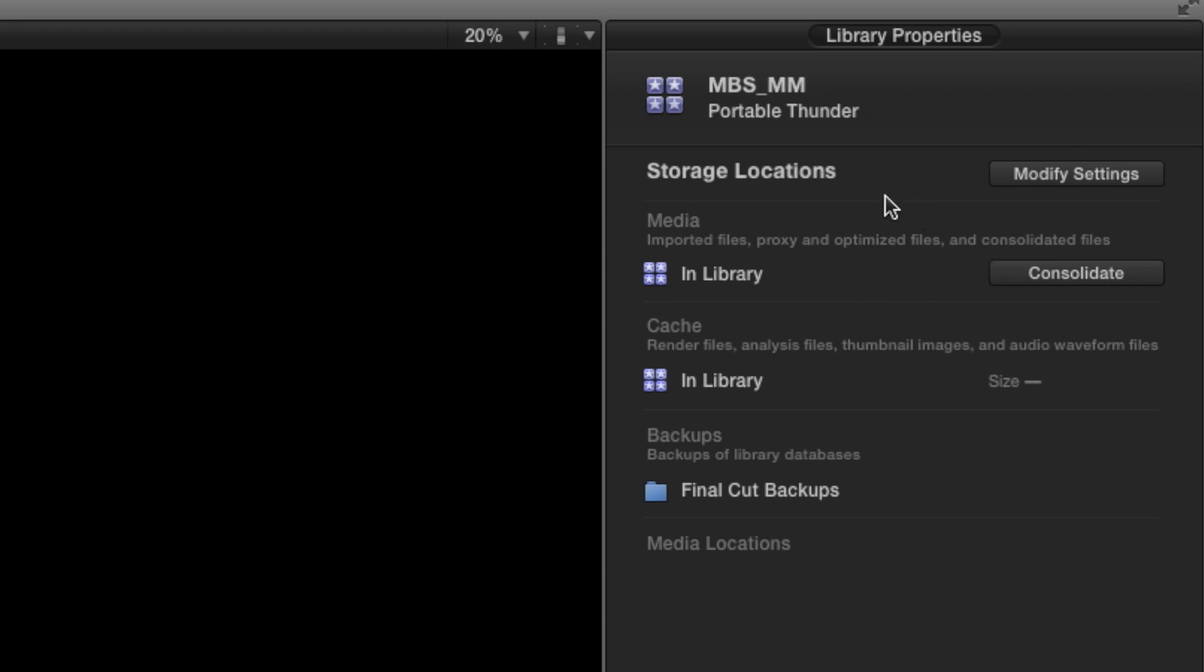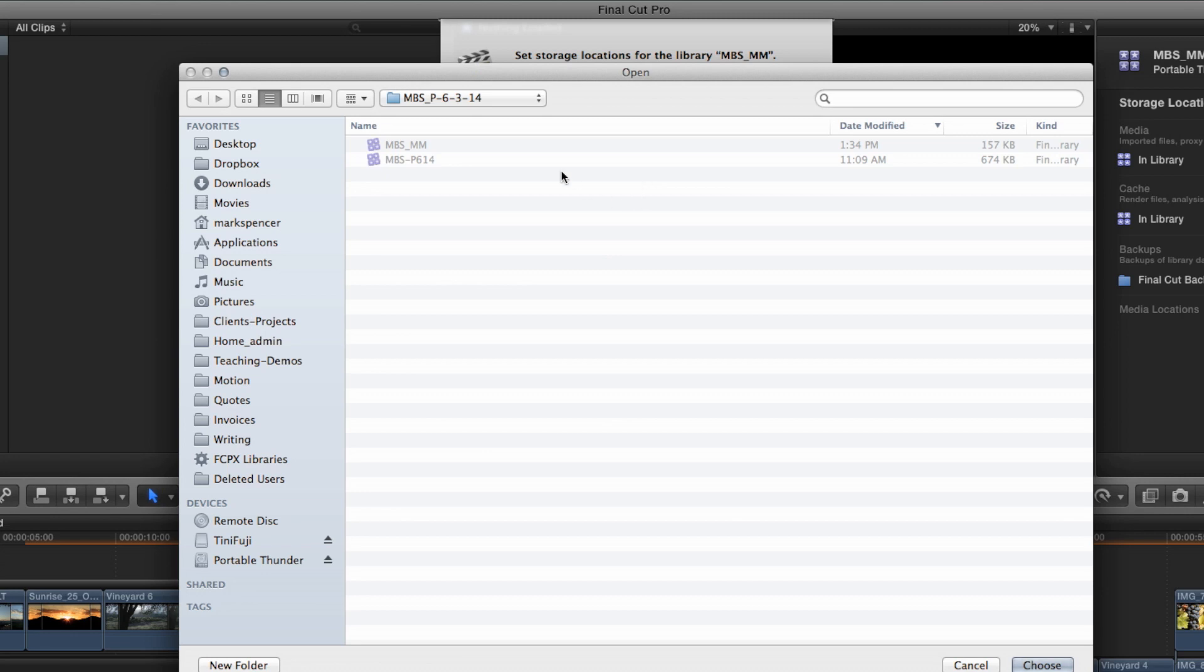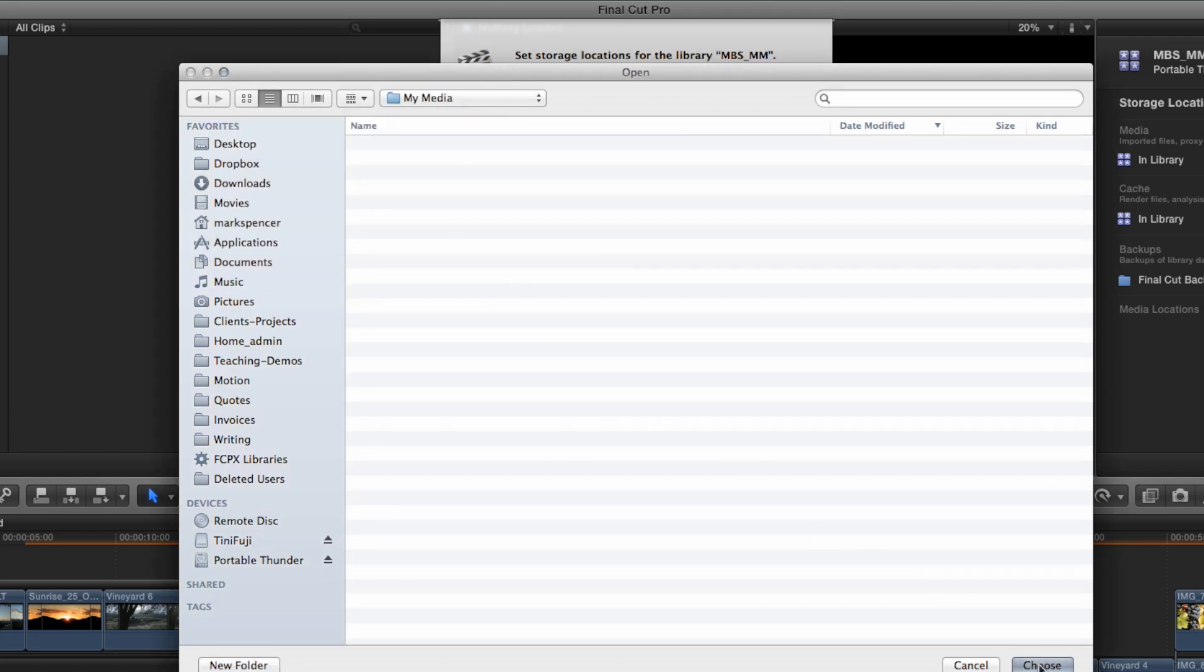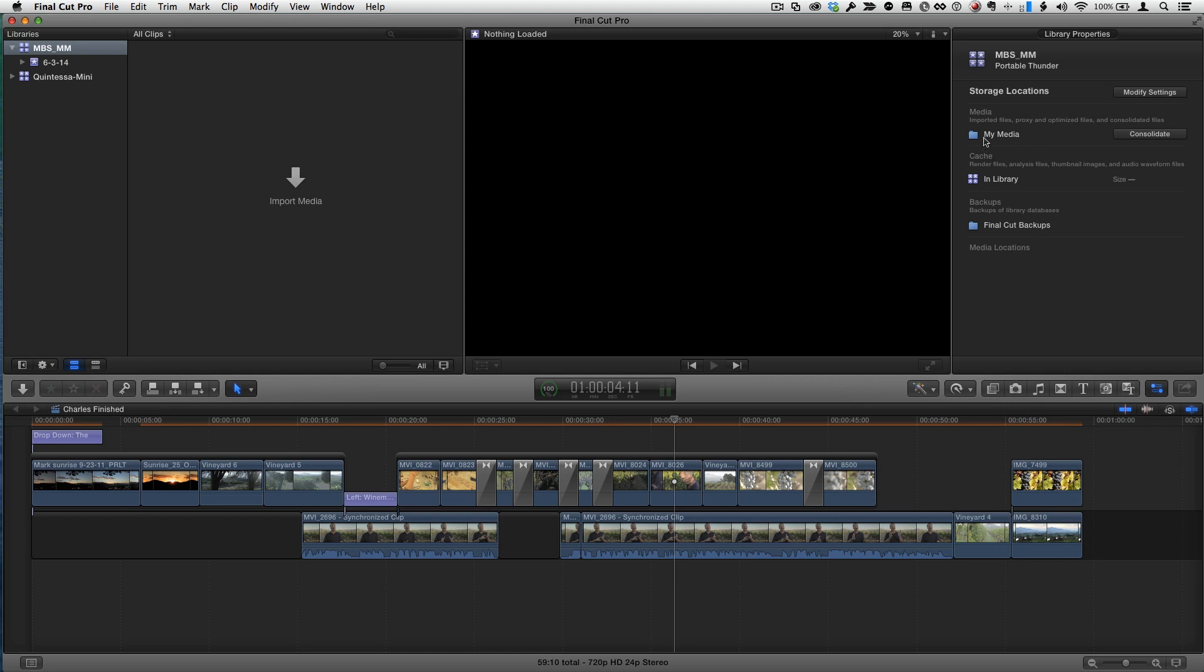So if you are in a shared environment, either locally or remote, you can pass this small library back and forth and people can access it. It'll point to the media. So I want to demonstrate exactly how that happens. If you look very close, it's very tiny here, but you look, media includes imported files, proxy and optimized files, and consolidated files. So I want to demonstrate how it actually can include that proxy and optimized media when it's not in the library. That's what this Modify Settings button is about and it allows you to change these targets. So if I click on it, we get a window that lists these same three areas: media, cache, and backups. And so what I'm going to do for media, I'm going to go to choose and I'm going to place the media instead in this same folder I have here and I'll create a new folder and I'll call it My Media.